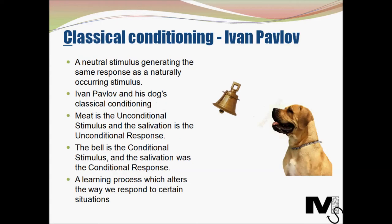The first concept is classical conditioning, proposed by Ivan Pavlov. Do you think anyone would actually respond the same way to an advert of a cheeseburger as they would respond to an actual cheeseburger? Is that possible? Well, classical conditioning says yes. Classical conditioning directs towards a neutral stimulus generating the same response in us that a naturally occurring stimulus would.